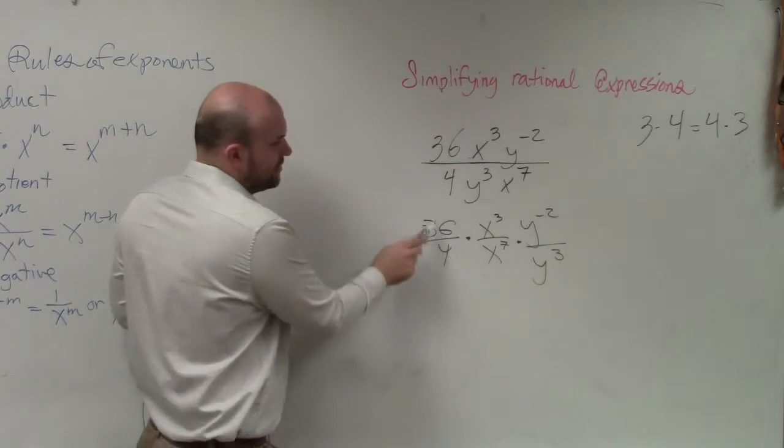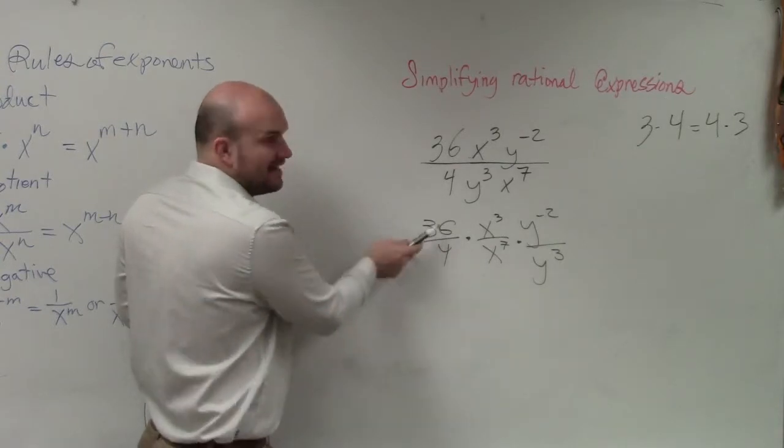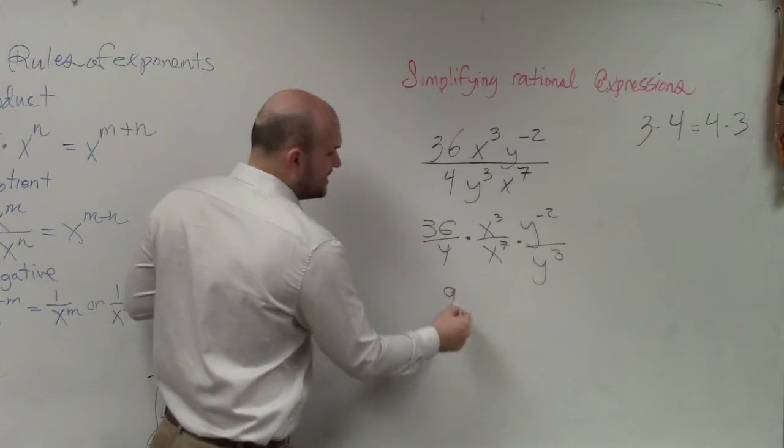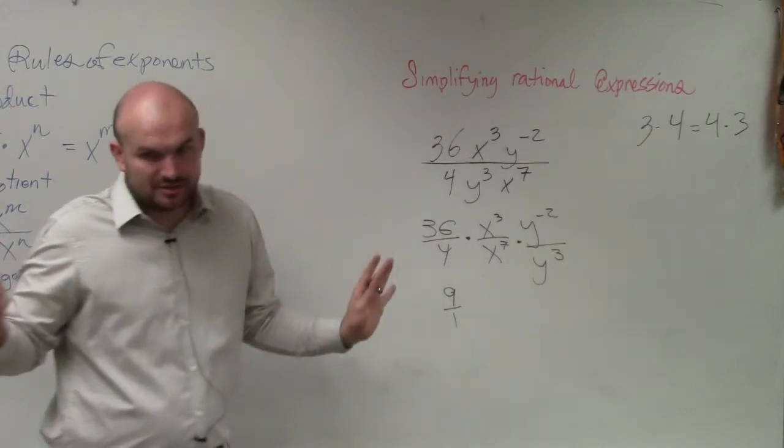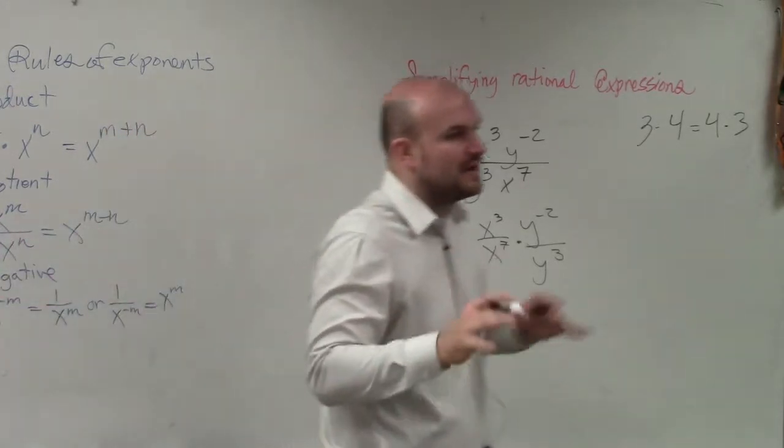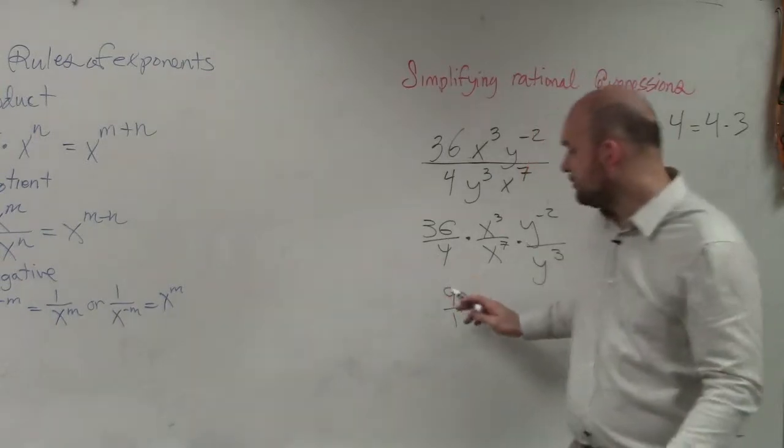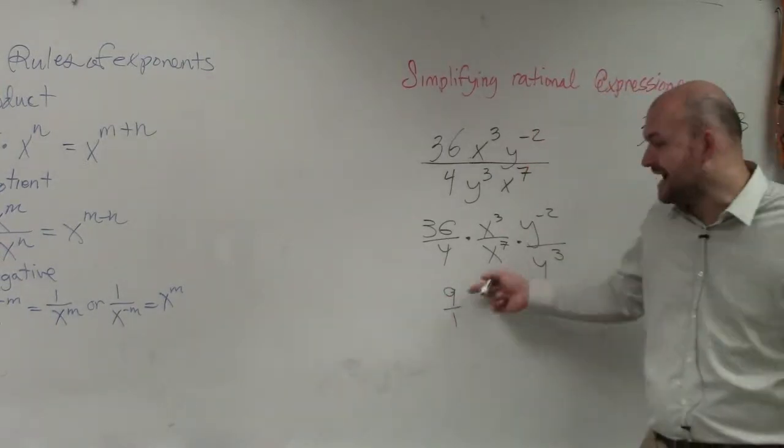So now, with 36 divided by 4, does 4 divide into 36 this time? Yeah, it goes in there nine times. Now, again, I'm just going to write it as a fraction. We know that it goes in there nine times, but I want to write it as 9 over 1, so I know what's in the numerator and what's in the numerator. I know that 9's in the numerator.